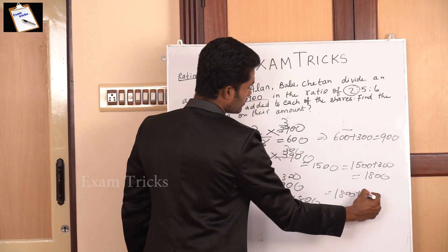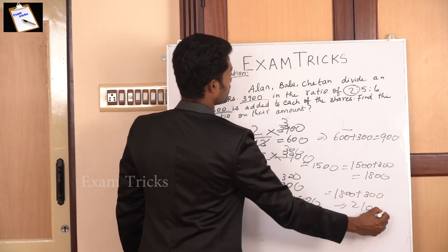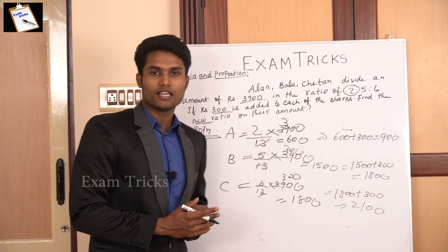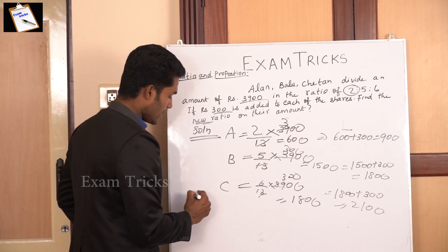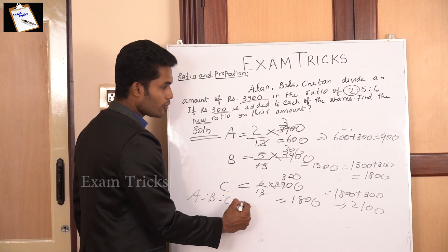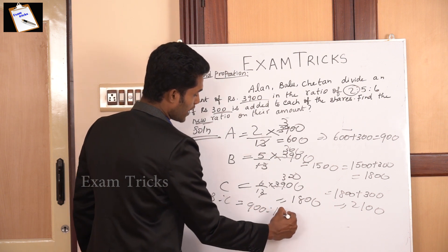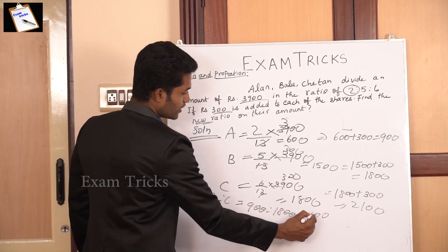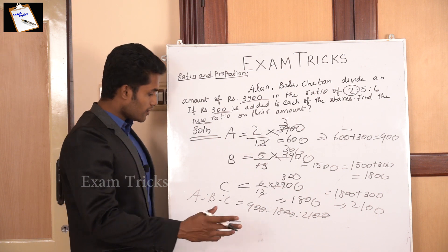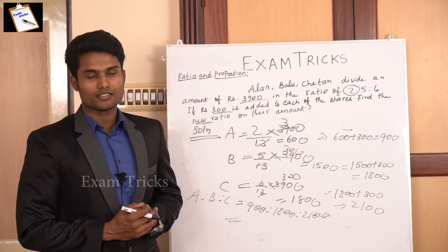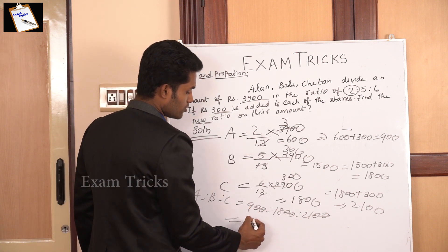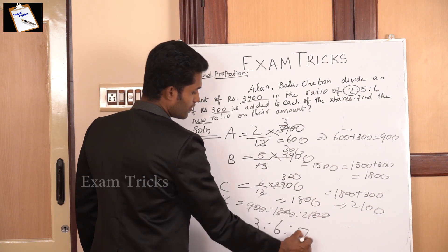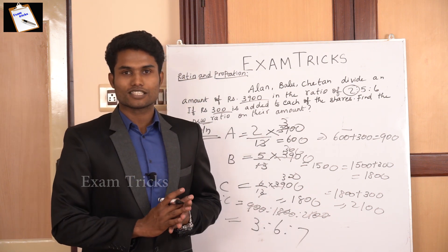If you add 300 rupees, it will become 2,100. Finally, we got 900 for A, 1,800 for B, and 2,100 for C. That means the new ratio — A is to B is to C — is 900 is to 1,800 is to 2,100. Cancel the zeros: 3 is to 6 is to 7. Our answer is 3 is to 6 is to 7.